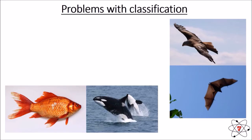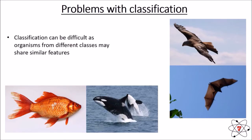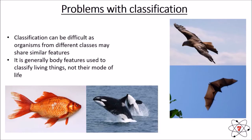There are some problems with classification. Organisms from different classes may appear to share similar features, so it's generally the body features used to classify living things, not their mode of life. For example, both a goldfish and an orca killer whale live in water — but does this make an orca a fish? No. An orca needs to come above the water to breathe air into its lungs, it gives birth to live young, feeds its young with milk, and reproduces sexually with internal fertilization — none of which fish do. Fish do not breathe air, they lay eggs fertilized externally, and they do not produce milk.